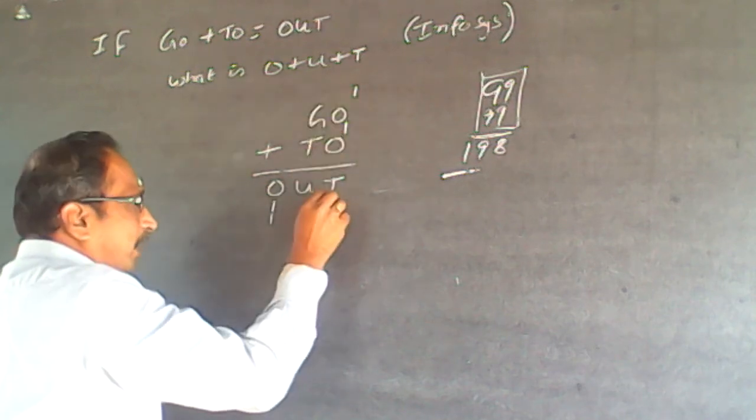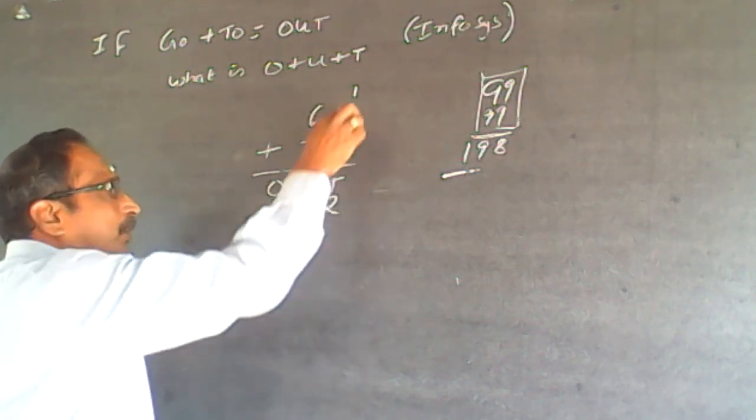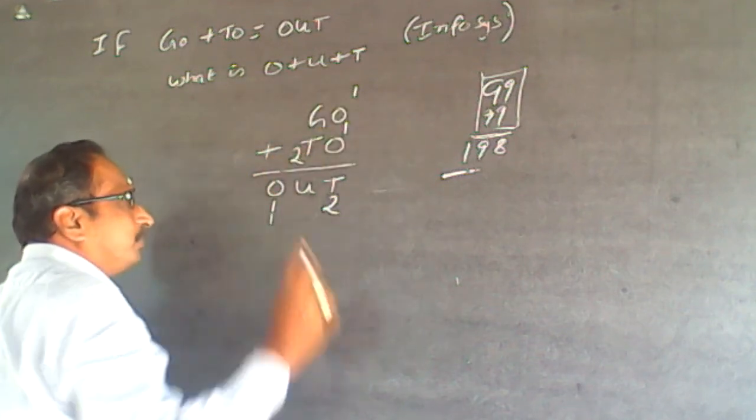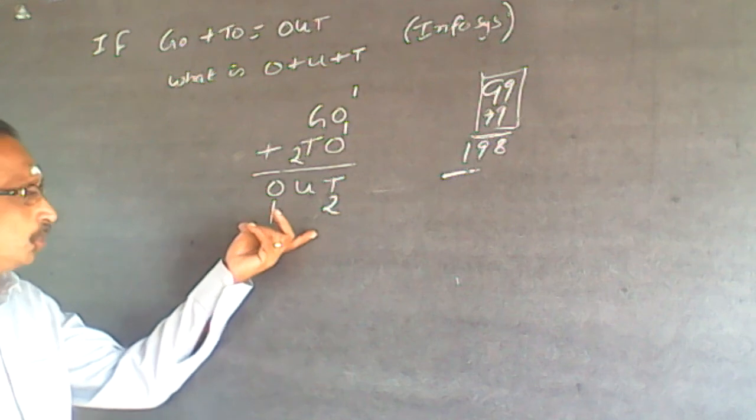Now, once you set O as 1, T will become 2. The moment I write T as 2, I am getting a three-digit number.